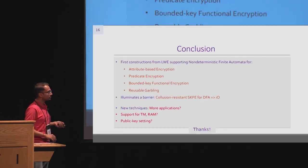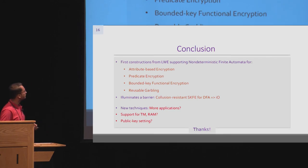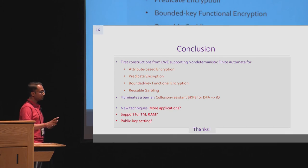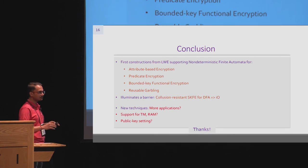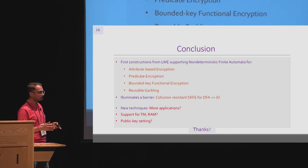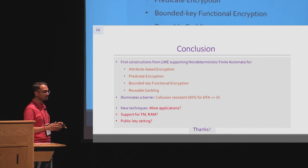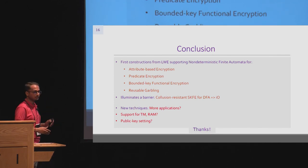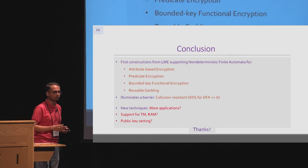To conclude: we have the first constructions of ABE and its generalizations for NFA from LWE. We also illuminate a barrier, and our techniques are new — we hope they may find more applications in similar and different contexts. We also want to see how to support Turing machines and RAM. Last but not least, the primitive is restricted to the secret key setting, and we want a generalization to the public key setting. Thank you for your attention.